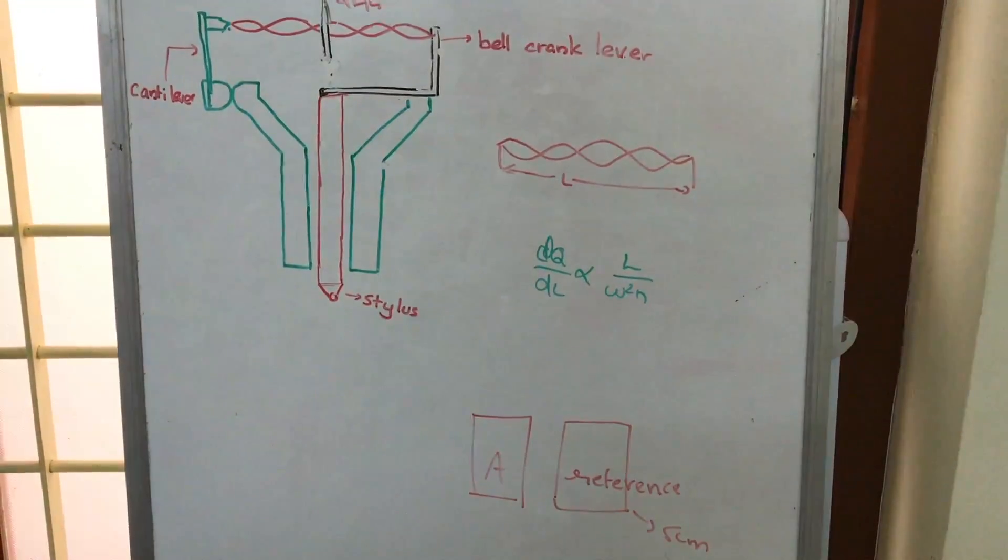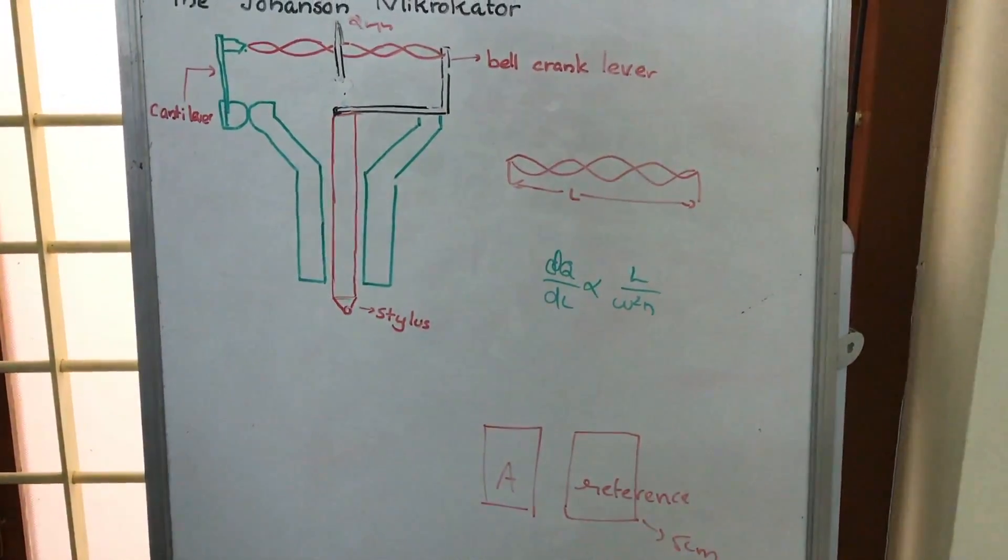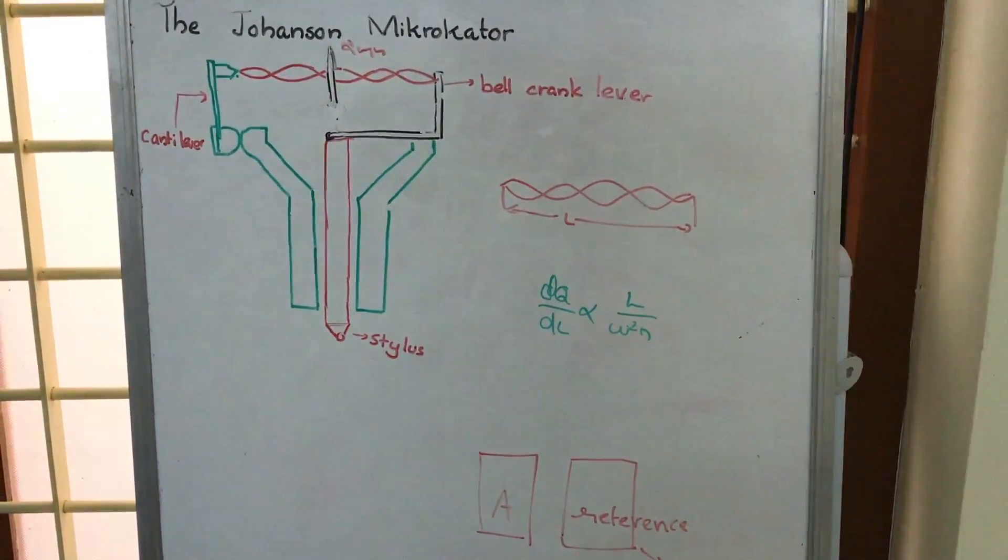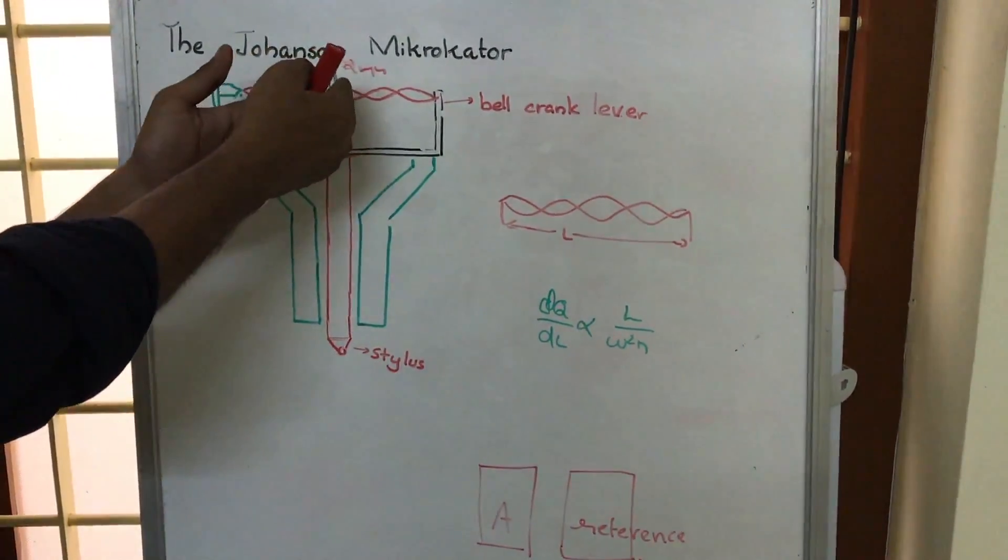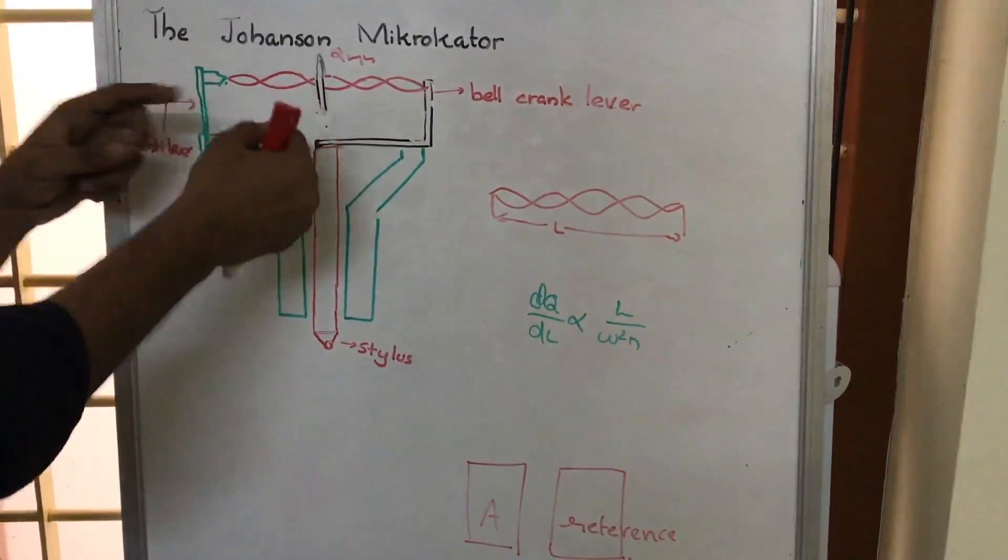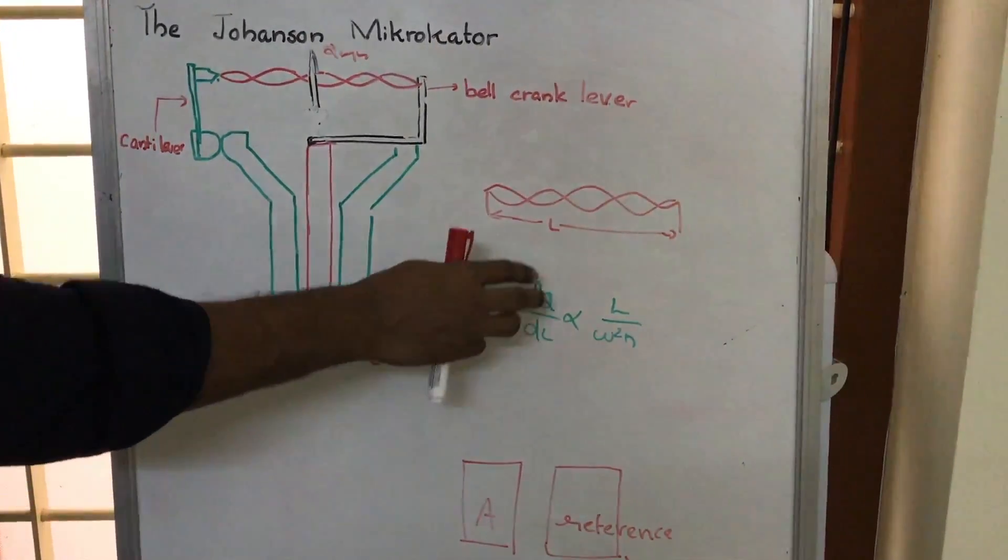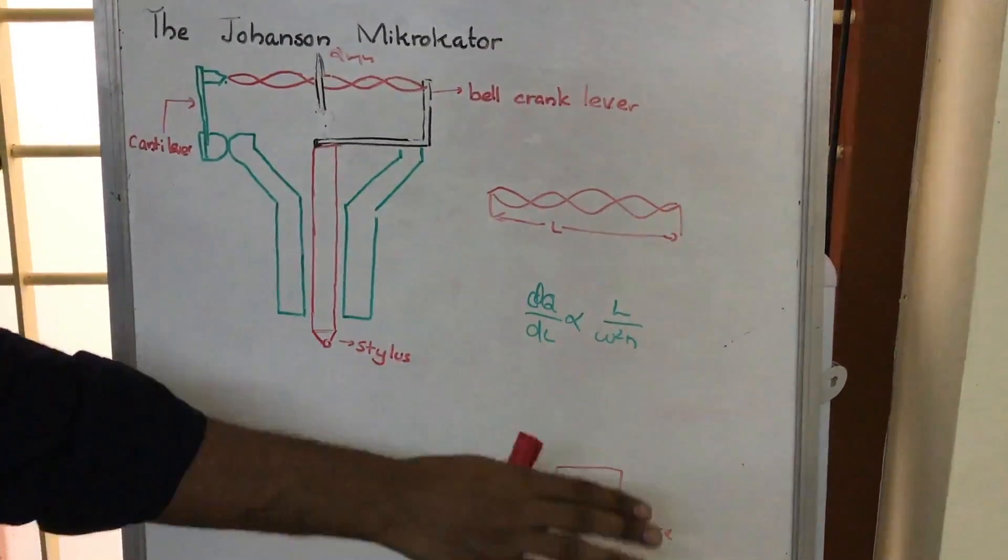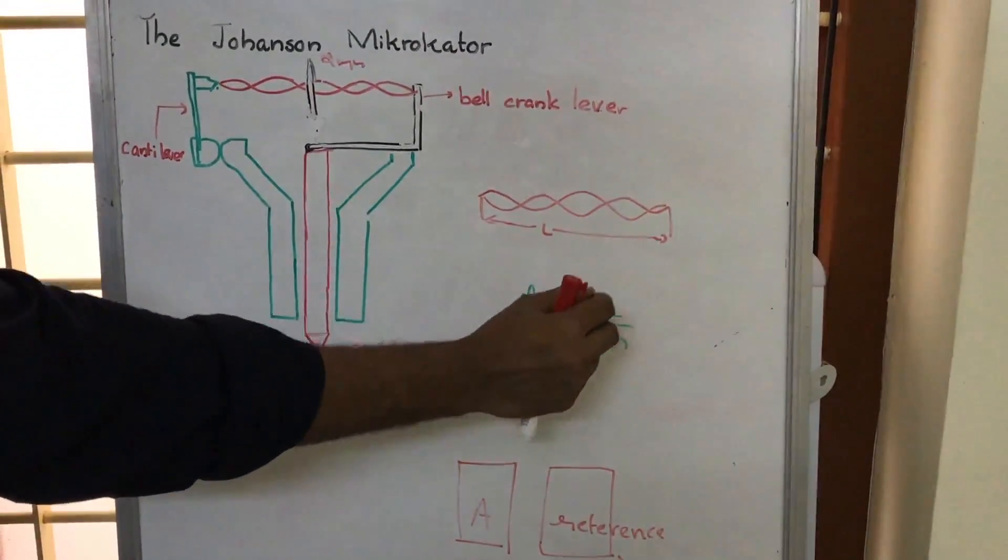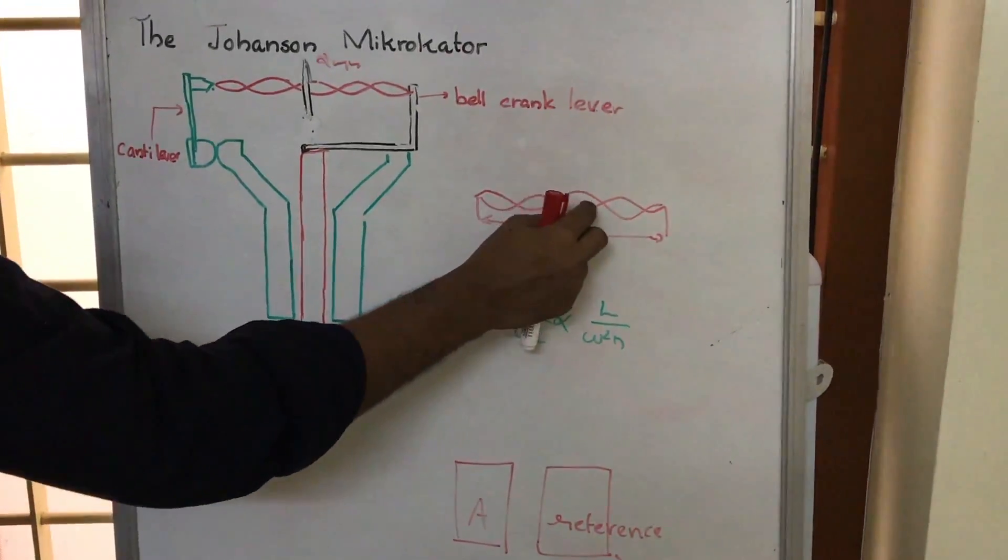Here, l is the length of the strip and θ means the twist at the midpoint of the strip. At the midpoint, we connect the needle. The derivative of twist at the midpoint with respect to length is proportional to l (length of the strip), w (width of the strip), and n (number of twists).